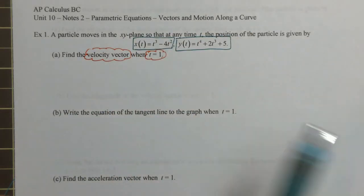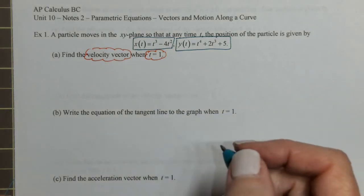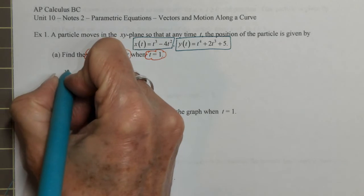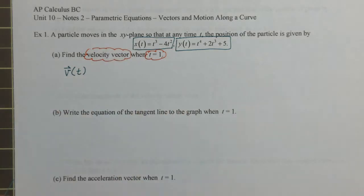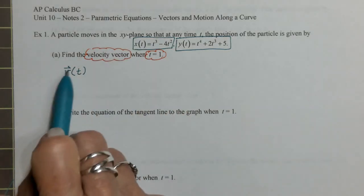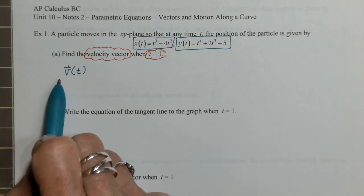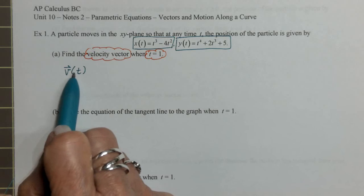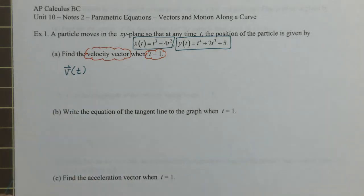Velocity is a vector because it has two components — it has both the x and the y component. So the velocity vector — it is a vector. I like to use vector notation when I'm dealing with a vector. Whenever I'm writing a vector you'll see me put this little vector notation on top of whatever the vector is, so in this case it's velocity.